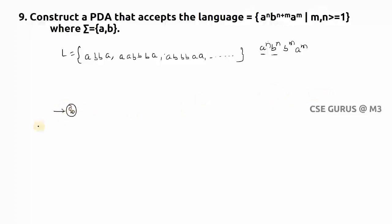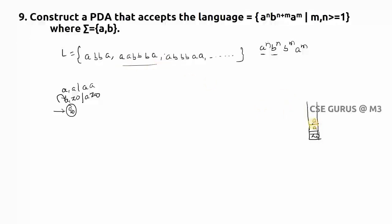From q0 I'll start. The first symbol must be 'a'. The initial stack symbol is z-naught. On input 'a' with stack z-naught, I push 'a' — that is (a, z-naught → az-naught). The next symbol can be 'a' or 'b' depending on n. Whenever I get 'a' with 'a' on top, I push: (a, a → aa). This is a self-loop — every time I get 'a' I push it.